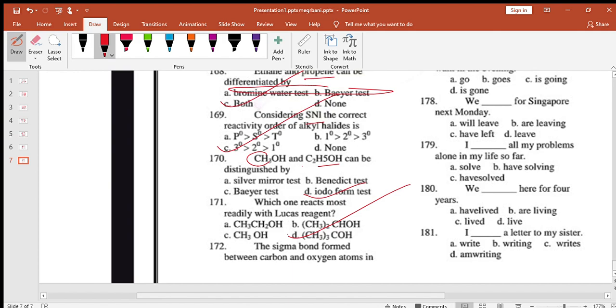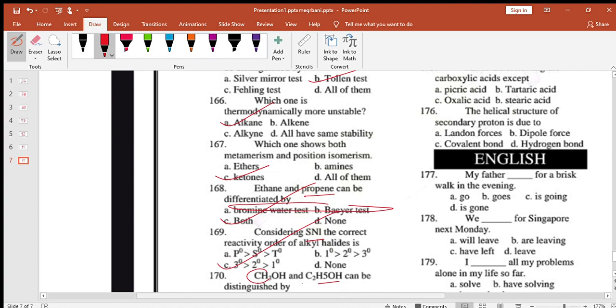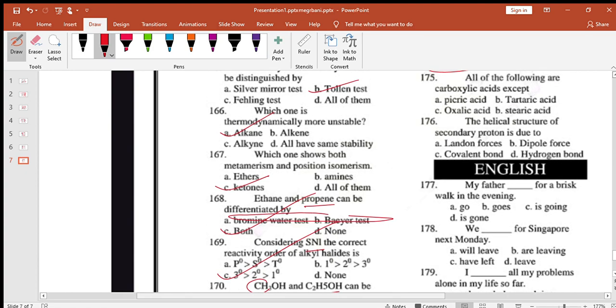The sigma bond formed between carbon and oxygen atom in aldehyde and ketone is due to overlap. Which one has greater oxidizing power? Tollens. Select the test used for the estimation of glucose in blood and urine. All of the following are carboxylic acids except picric acid is not a carboxylic acid. The helical structure of secondary protein is due to hydrogen bonding.